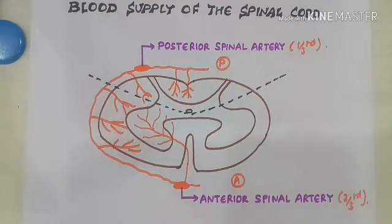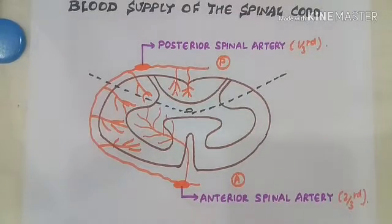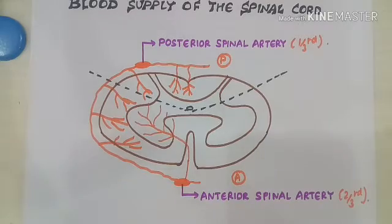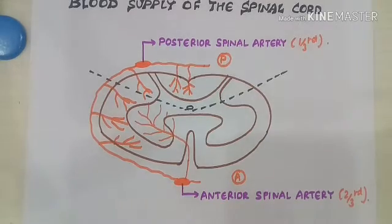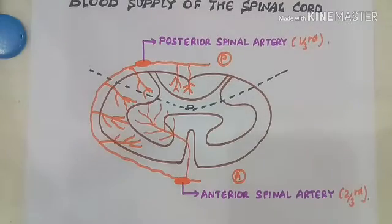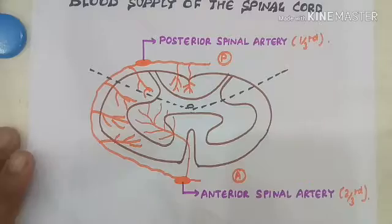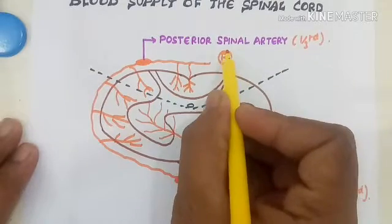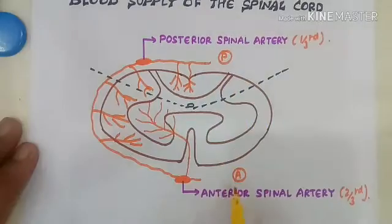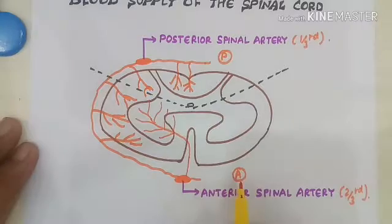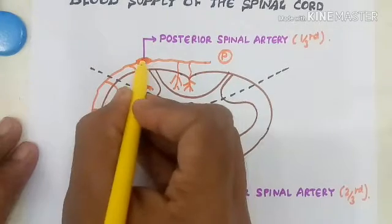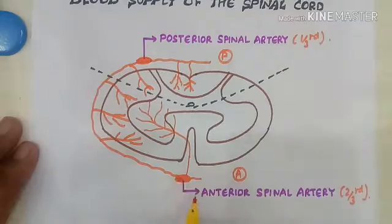Here is the rough diagram of the spinal cord. This part is the dorsal or posterior part, and this is the anterior or ventral part of the spinal cord. This part is the posterior spinal artery, and this is the anterior spinal artery.